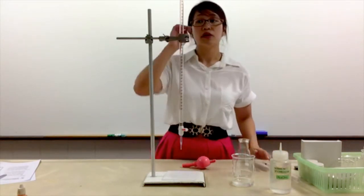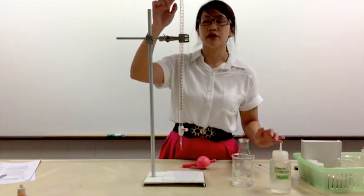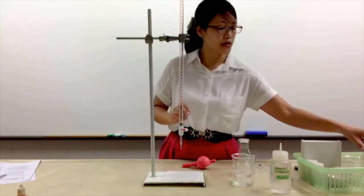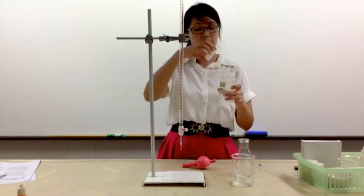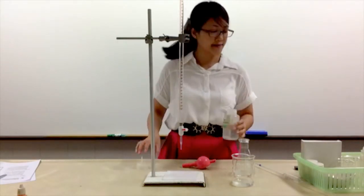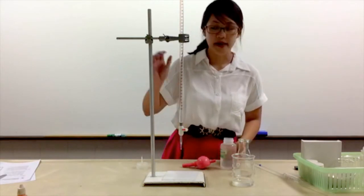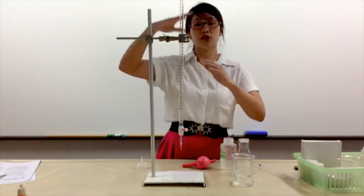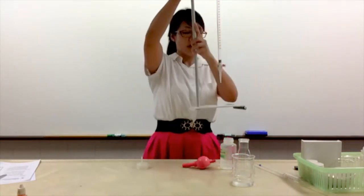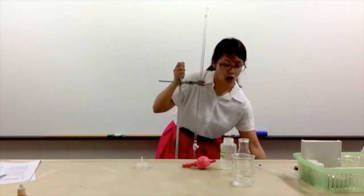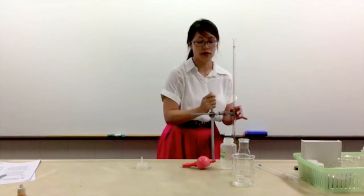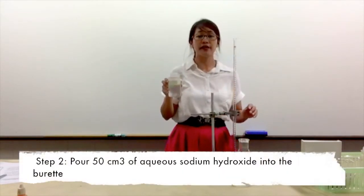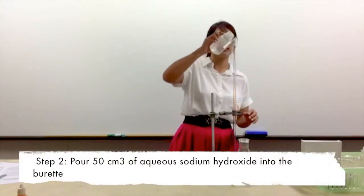Now step two: you will need to put the alkaline into the burette. Open up your bottle of sodium hydroxide. You'll realize that the burette is too tall - you may want to put it onto the floor or onto a bench so that you can pour it more easily. Pour 50 cm³ of sodium hydroxide into the burette.